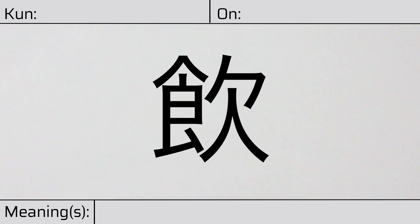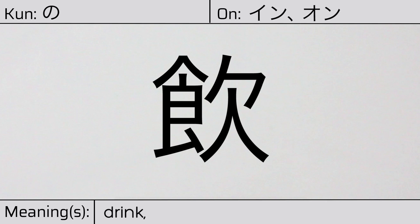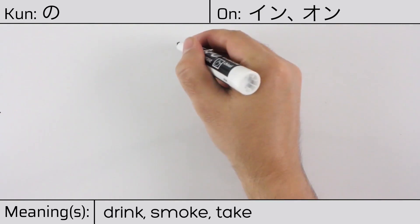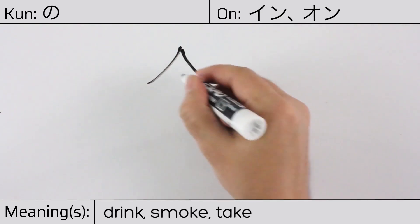Welcome to this lesson on Japanese kanji. Today, we'll be discussing this character. This kanji has kunyomi or Japanese reading of no, and it has onyomi or Chinese readings of in or on. This character has the meanings drink, smoke, or take. Here is the stroke order.